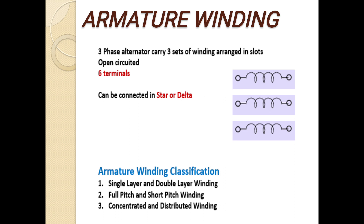A coil is formed when a number of turns are grouped together, also called a multi-turn coil. A coil consisting of a single turn is called a single-turn coil. The part of the coil in each slot is called the coil side. Pole pitch is the center-to-center distance between two adjacent poles. Slot angle is the phase difference contributed by one slot in electrical degrees, called the slot angle.